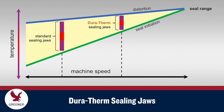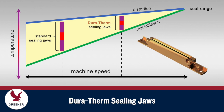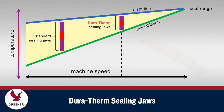Sealing jaws made from Duratherm, a durable alloy with excellent thermal conductivity, have been shown to decrease temperature cycle fluctuations by 80% or more. Duratherm sealing jaws provide excellent seal quality at higher speeds and for packaging materials with narrower seal ranges, such as today's sustainable mono materials.